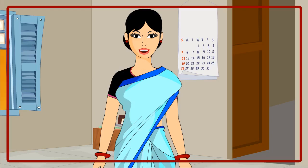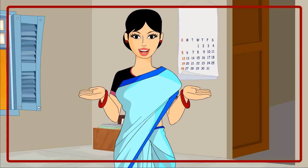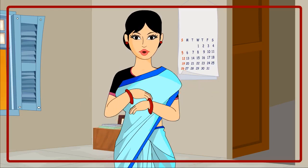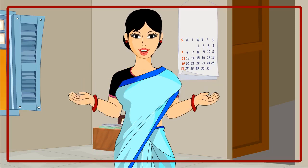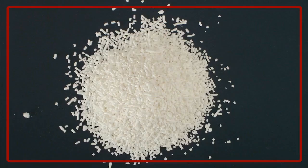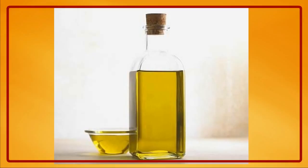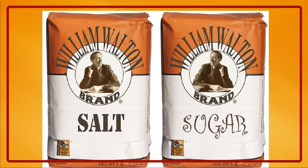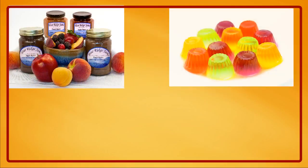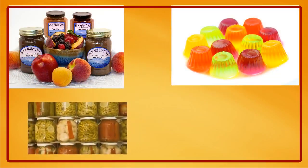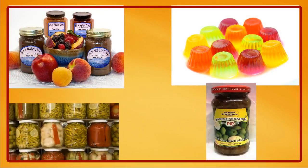Food spoilage can be prevented by preserving the food properly. Some methods of food preservation are: adding preservatives like sodium benzoate, oil, salt and sugar to prepare jams, jellies, pickles and murabbas.